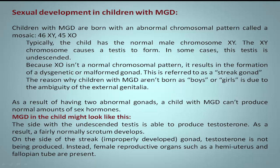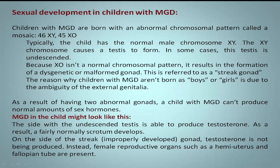On the side of the streak — improperly developed — gonad, testosterone is not being produced. Instead, female reproductive organs such as a hemiuterus and fallopian tube are present.